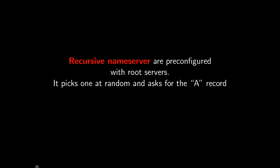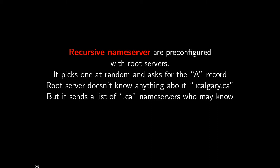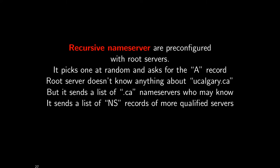It picks one at random and asks for the A record for ucalgary.ca. The root server doesn't know anything about ucalgary.ca — its job is to know its children in the distributed database. So it says: if you want anything .ca, talk to the .ca nameserver; if you want .com, talk to the .com nameserver. When you ask about ucalgary.ca, it replies with a list of .ca nameservers — the next step down the tree — along with NS records of servers more qualified to answer your question.